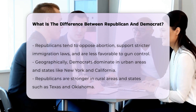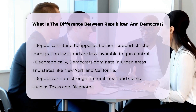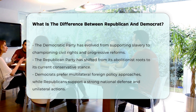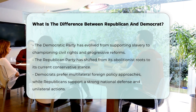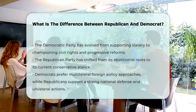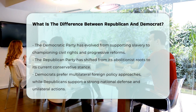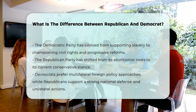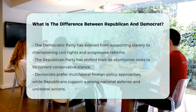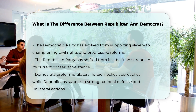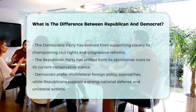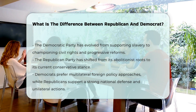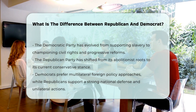Leadership and party structure. Historically, the Democratic Party has evolved significantly, from supporting slavery in the 19th century to becoming a champion of civil rights and progressive reforms in the 20th century. The party has formalized leadership positions, such as the party leader or floor leader, which play crucial roles in organizing party activities and legislative agendas. The Republican Party has also undergone significant changes, from its abolitionist roots to its current stance on various issues. Like the Democrats, Republicans have established formal leadership roles that influence party decisions and legislative actions.